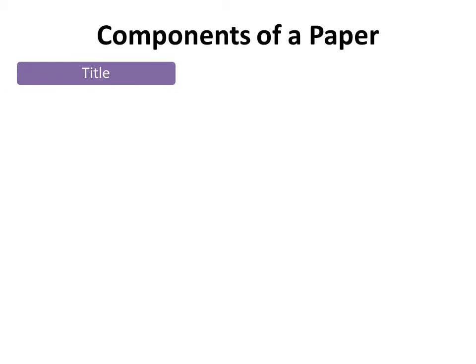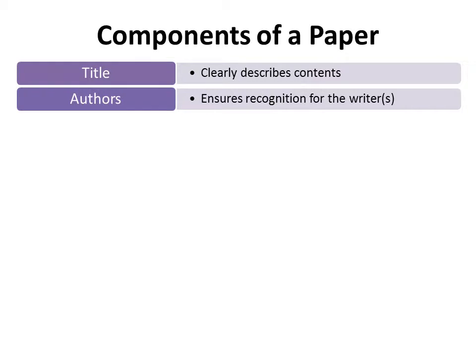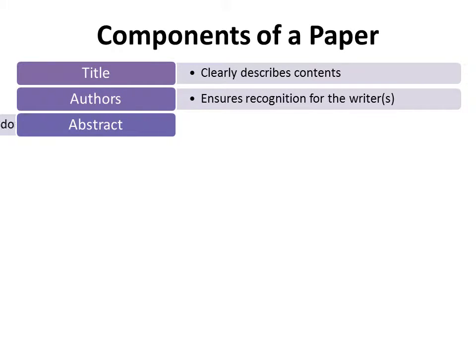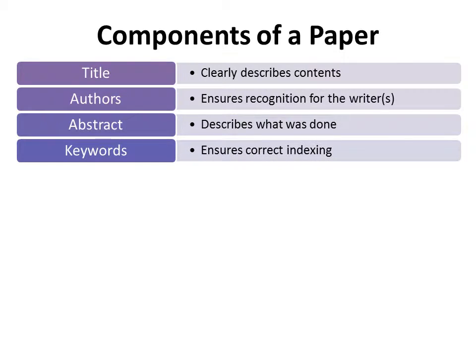Now let's briefly describe the components of a paper. First, the title, which clearly describes the contents. The authors, which ensures recognition of the writers. The abstract, that describes what was done. Keywords, that ensure the correct indexing.